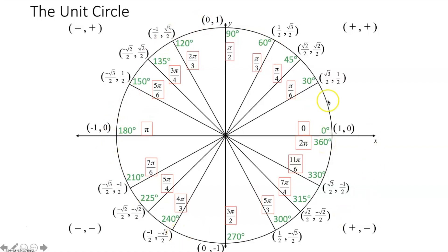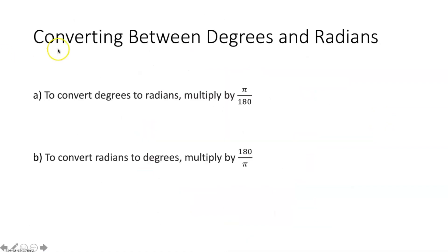So now we have completely filled out our unit circle. We have all of the angle measures in terms of degrees and radians, and we have the x and y coordinates of each point along the unit circle. We can now use this to answer a variety of questions. Sometimes you won't be able to use radians, or you won't be able to use degrees, and you need to convert between them.